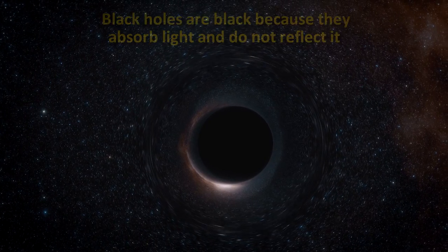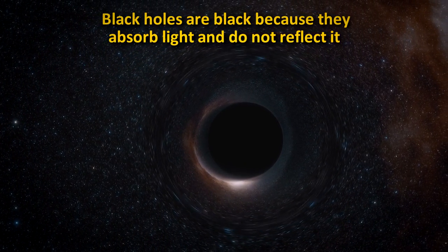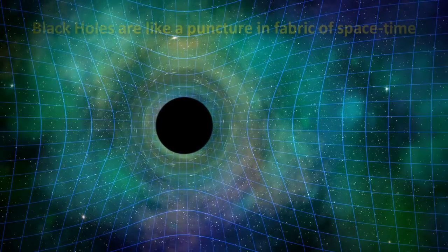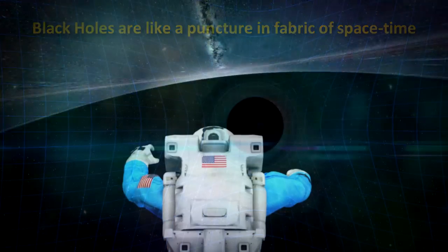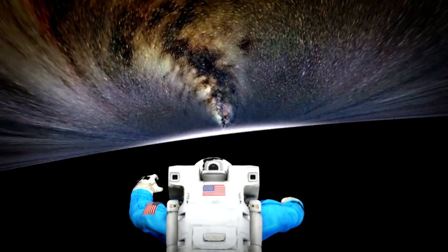Black holes are one of the most mysterious and intriguing objects in the universe. The name is appropriate because first, it is black, meaning that it absorbs all the light coming in and does not reflect anything back. It is a hole because it is as if it is a puncture in the fabric of space-time. The space inside the event horizon does not behave anything like empty space.